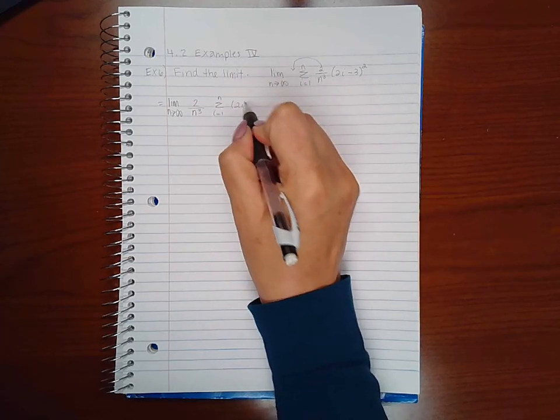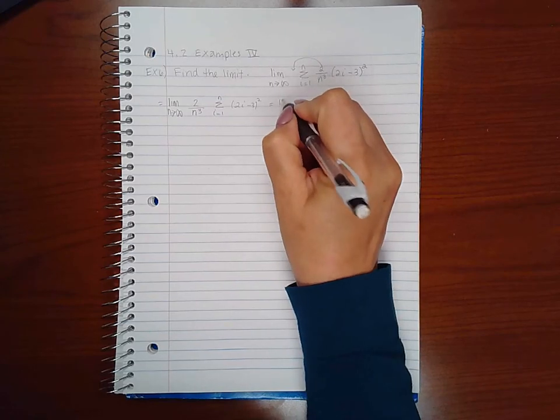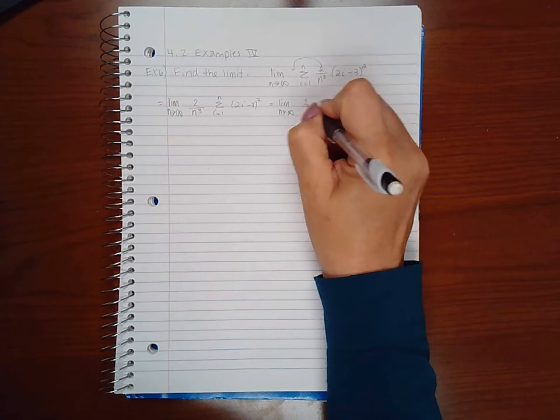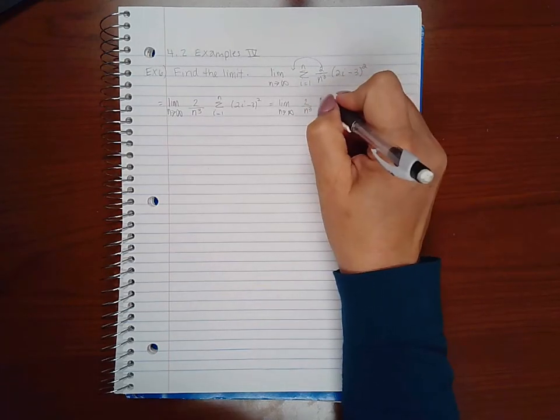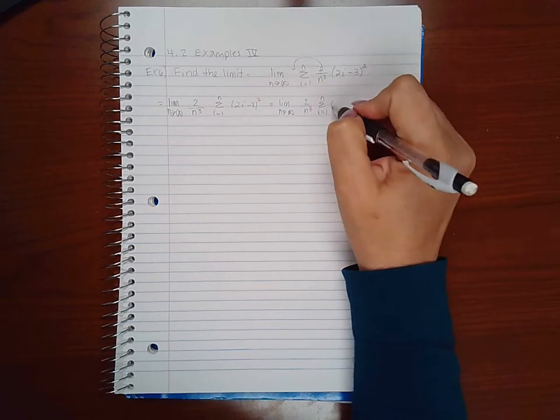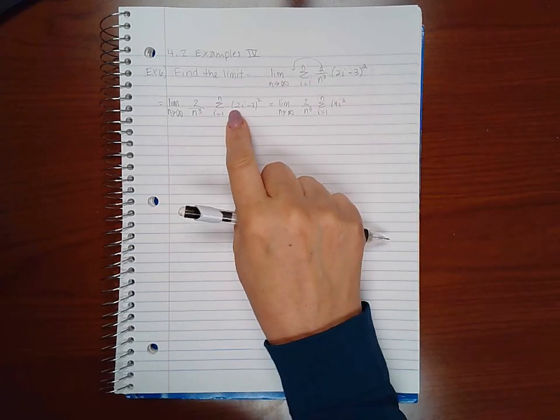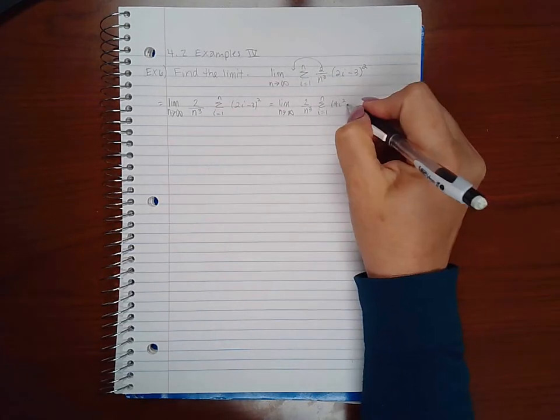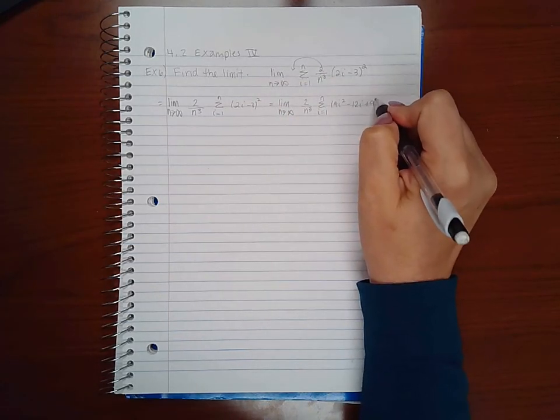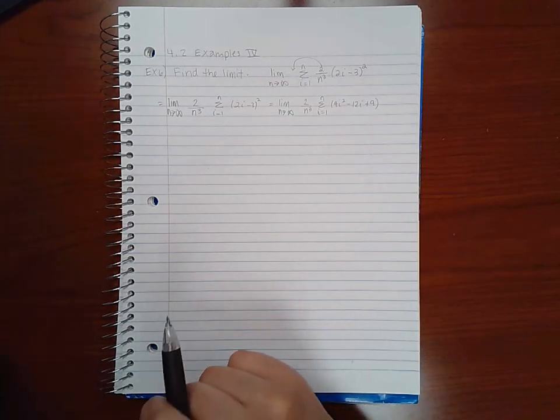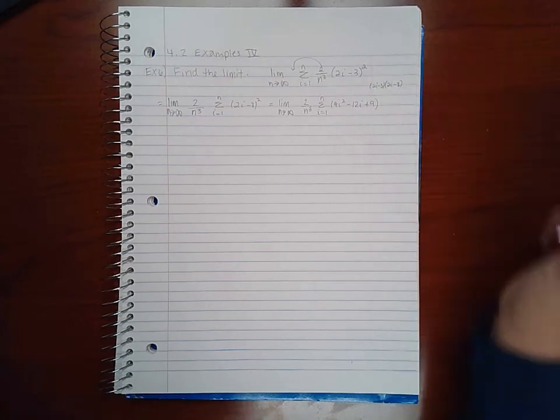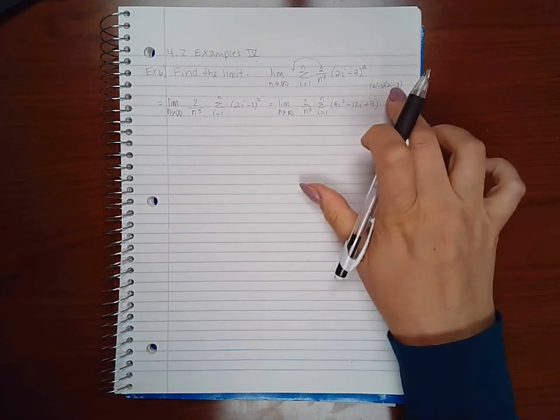So I have 2i minus 3 squared. The next thing I'm going to do is actually square that value, that quantity in parentheses, so that I can figure out how to get the sums.